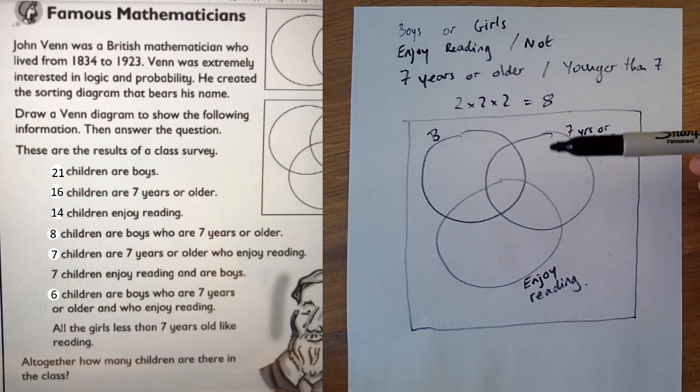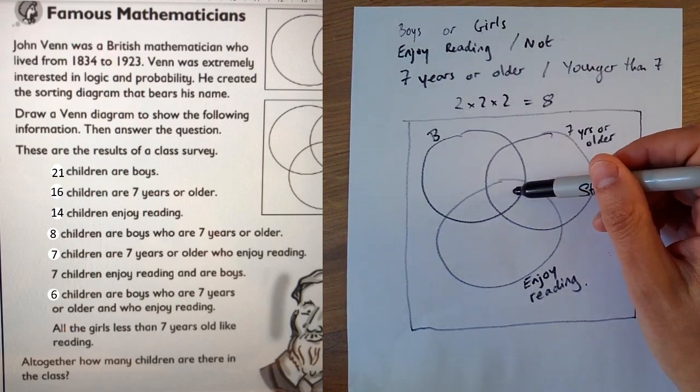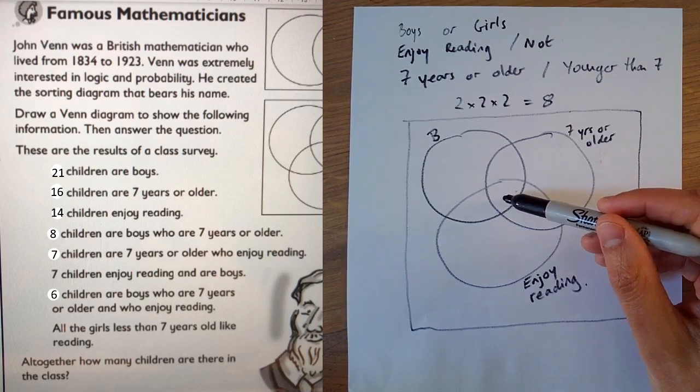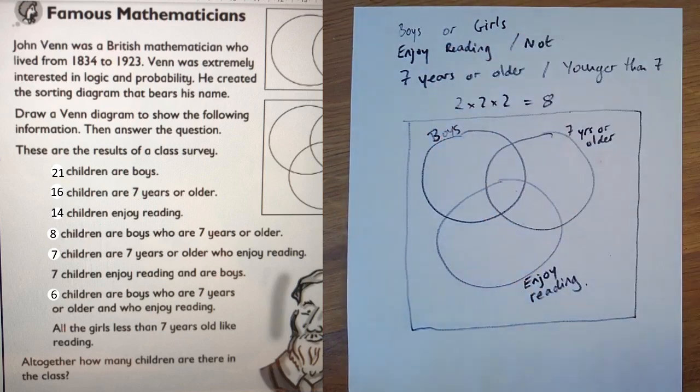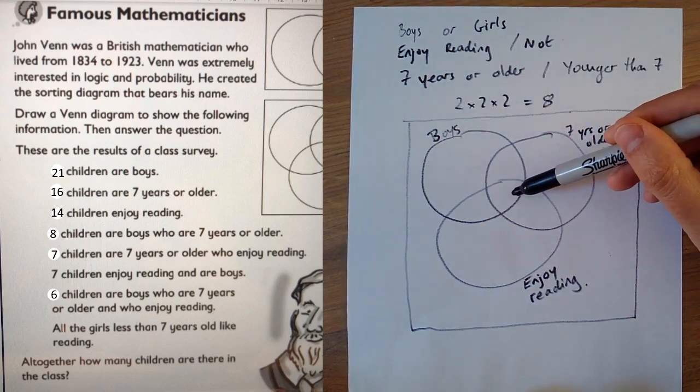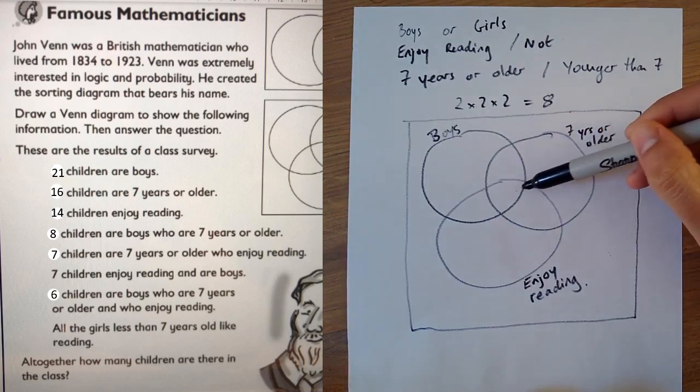Every time you do one of these questions, you start off by trying to fill in the very central one, the one right in the middle, the one that overlaps all three. So let's have a think about who these people are. It's just annoying me that that just says B rather than boys. So I've changed it to say boys. So who are in this category here, this central one? They are boys who enjoy reading who are also seven years or older. Now we hope that that information is in the question. Start looking down these facts.